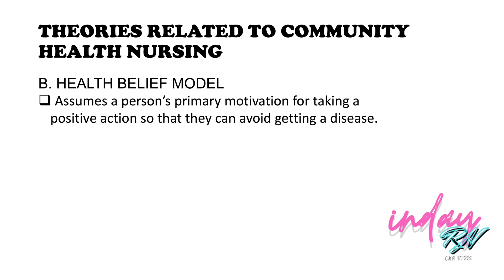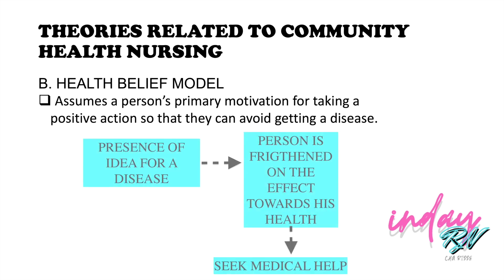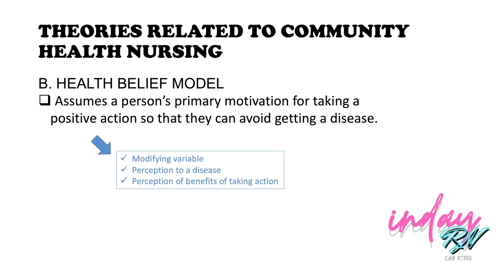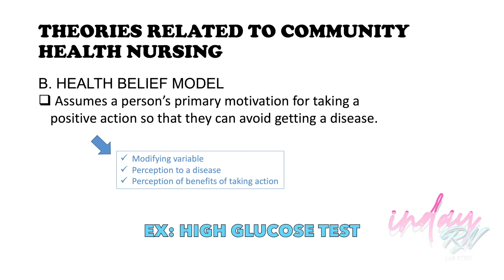The next theory is the Health Belief Model, which assumes a person's primary motivation for taking positive action is to avoid getting a disease. In this model, the individual will be frightened by the idea of disease or illness and be prompted to seek out preventive care services based on the benefits it provides. For example, a patient with high glucose levels has that as a primary motivation for taking positive action.